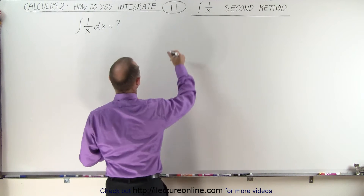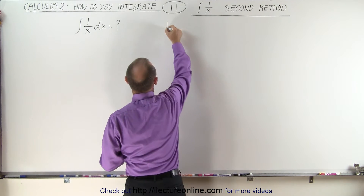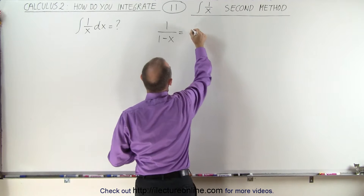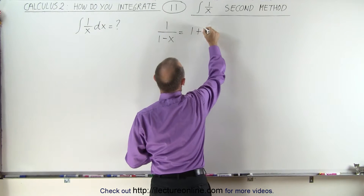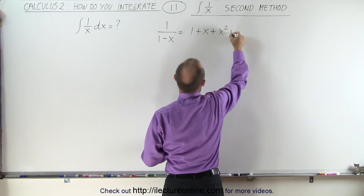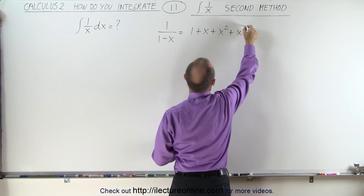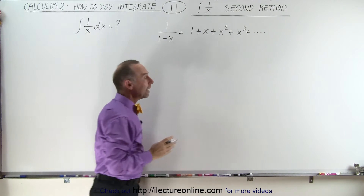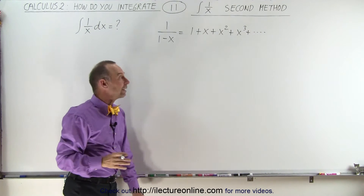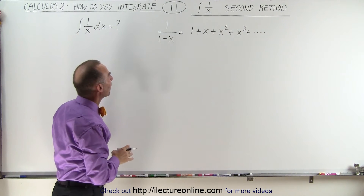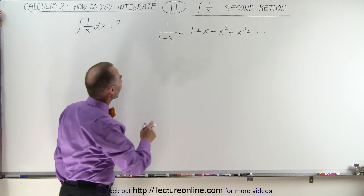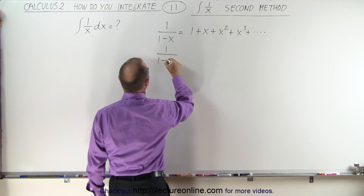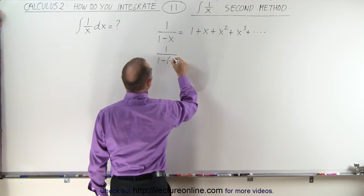Again, we start with the power series of 1 over 1 minus x, which can be written as 1 plus x plus x squared plus x cubed and so forth. And now we're going to replace the minus x by a plus x.